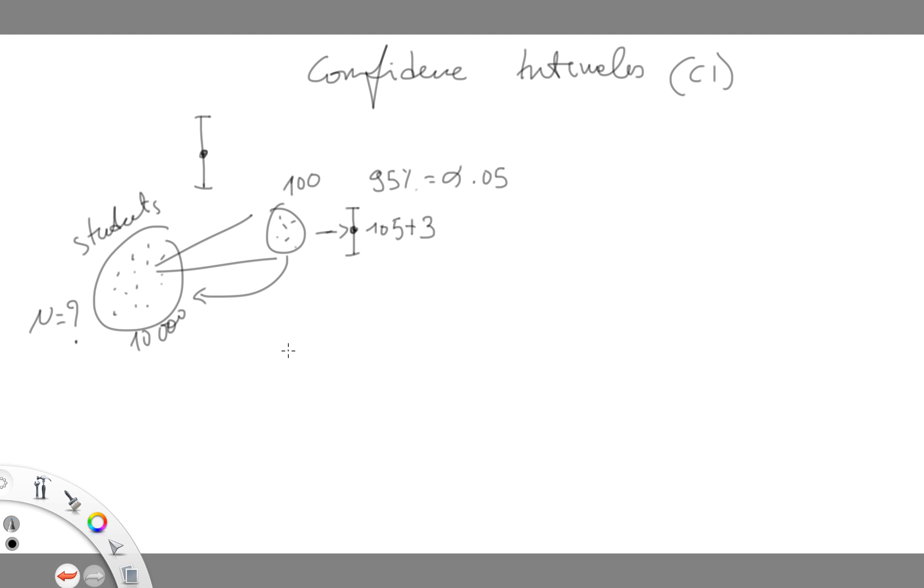A second thing that the confidence interval is telling us is precision. A narrow confidence interval is more precise than a large or long confidence interval. This is simply because shorter arms of the CIs are telling us that we are quite sure that the true population average is around here but not beyond the two margins.